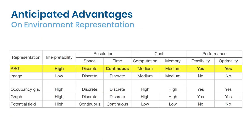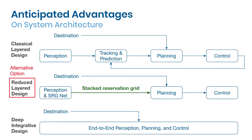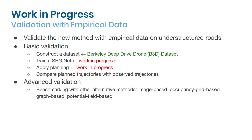If we compare SRG with other common representations, we will find that SRG provides a good trade-off for navigation tasks in unstructured environments. On the level of system architecture, the proposal of SRG enables an alternative design that trades between modularity and homogeneity. As the next step, we are working on validating the concept of SRG using an empirical dataset called the Berkeley Deep Drive Drawn dataset, or the B3D dataset.